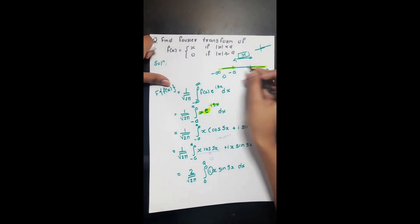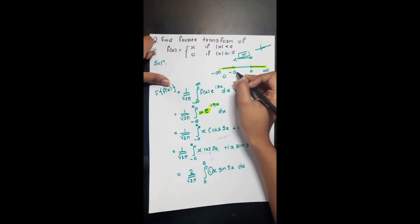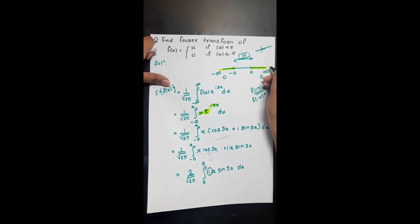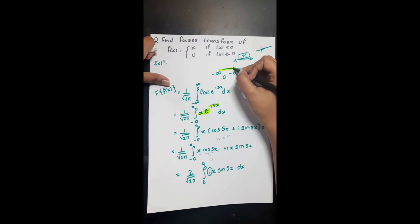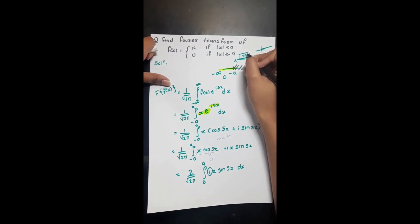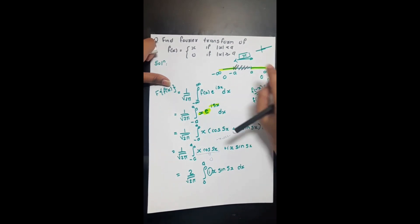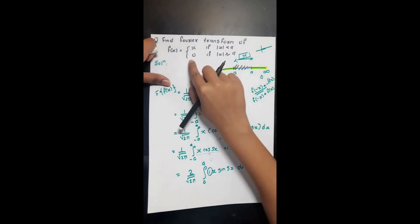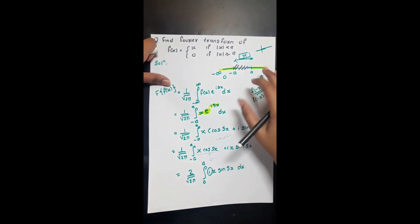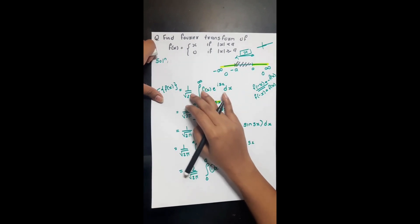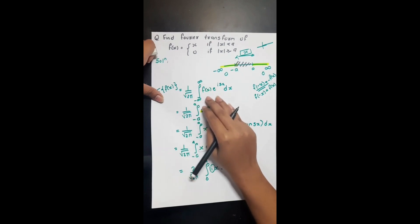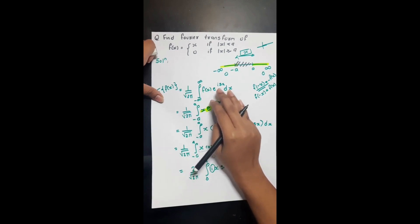On the number line, from minus infinity to minus a, the function value is zero, and from a to infinity the function value is also zero. Only in the region from minus a to a does our function have value x. So we write the Fourier transform formula as one over the square root of 2π, integrated from minus infinity to plus infinity, f(x) · e^(isx) dx.